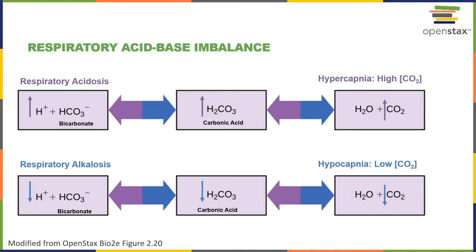Alkalosis as a result of a respiratory cause. The last variable we'll have to pay attention to — to diagnose whether acidosis or alkalosis is respiratory or from a metabolic cause — is the bicarbonate concentration. In respiratory acidosis, the bicarbonate concentration of the blood is either normal or increased. Whereas if it were a metabolic cause of acidosis, we would have a decreased bicarbonate level. With respiratory alkalosis, there's either a normal or decreased bicarbonate level. Whereas if it was a metabolic cause of alkalosis, we should see an increased bicarbonate concentration of the blood.